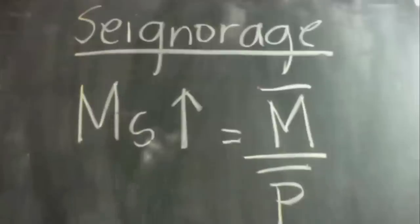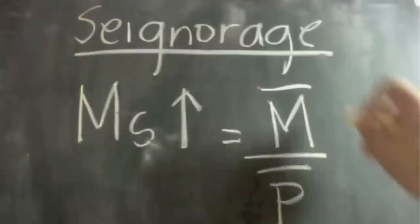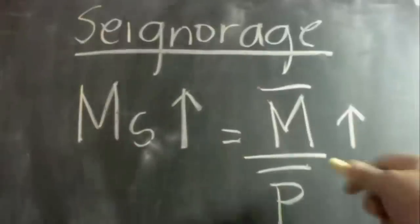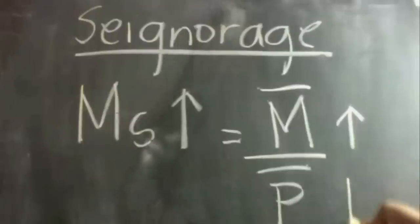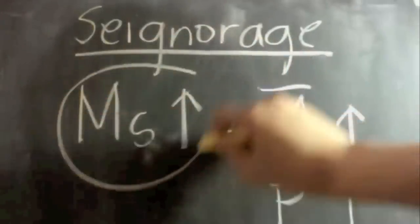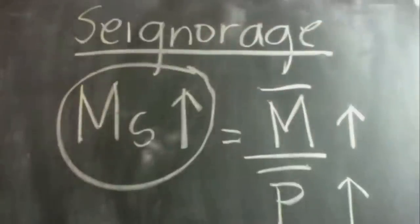If there is an increase in your money supply, there is also an increase in your fiat money. To make the equation balance, there must also be an increase in prices to make an overall increase in your money supply.